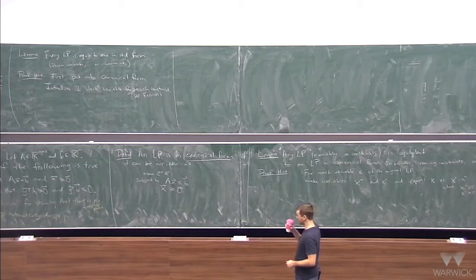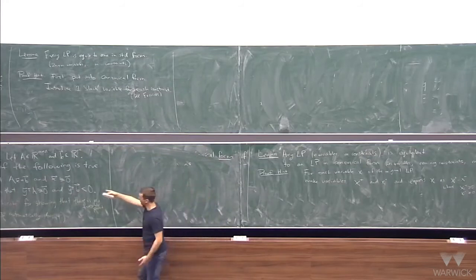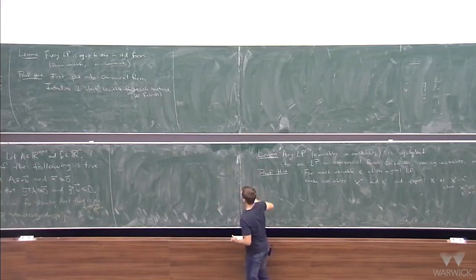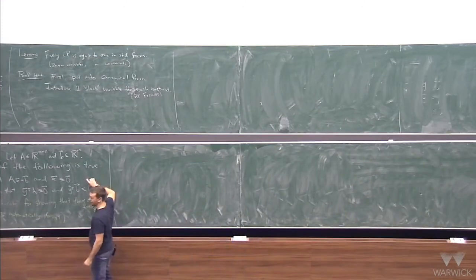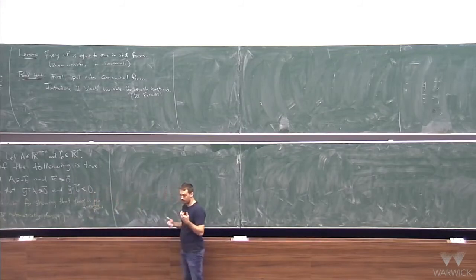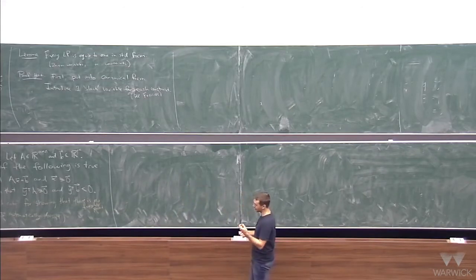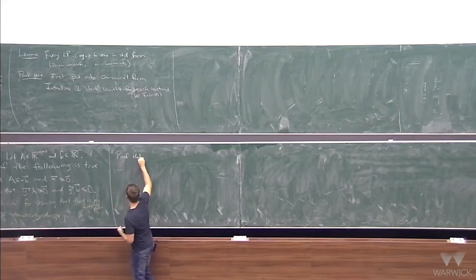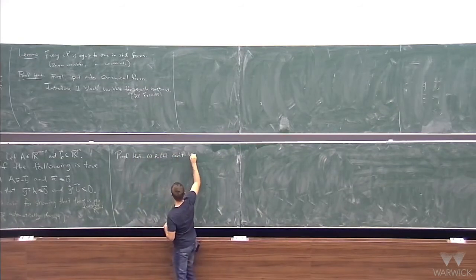So what I'm going to do is give you a proof of this lemma. Technically this only talks about things in standard form, but as I said, any linear program can be turned into standard form, so it actually applies to any linear program. We want to show exactly one of these is always true: first, we want to show they can't both be false, and second, we want to show they can't both be true at the same time.